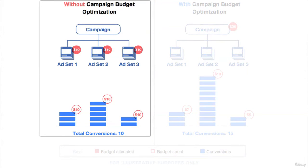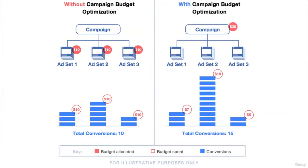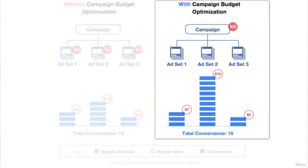Now let's look at the results from both campaign types. The total conversions from without campaign budget optimization, after spending $30 — $10 from each ad set — are: ad set 1 gives three sales, ad set 2 gives five sales, and ad set 3 gives two sales.